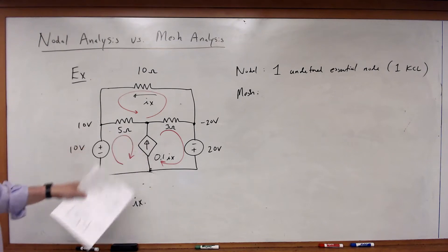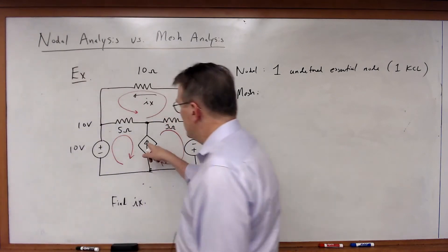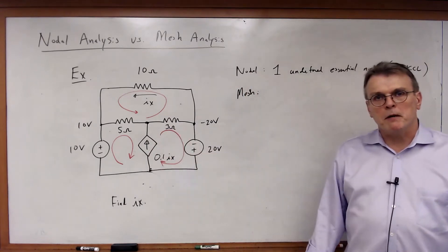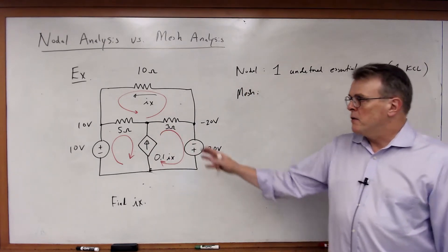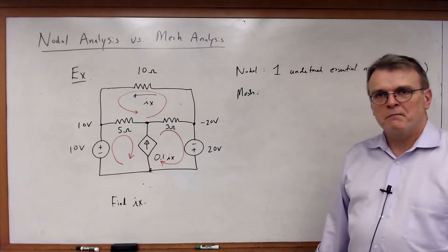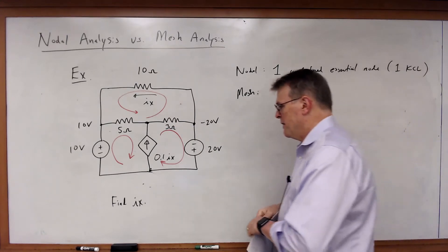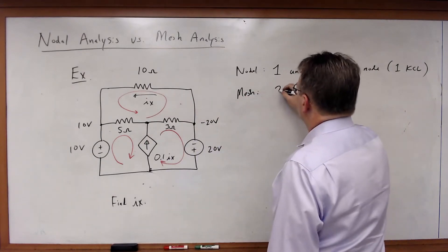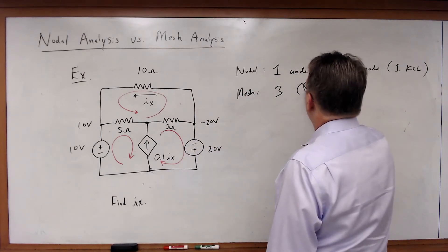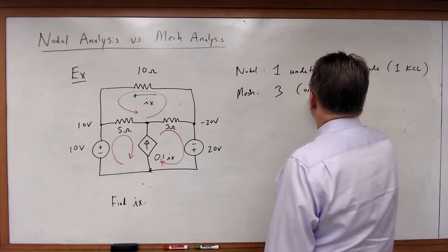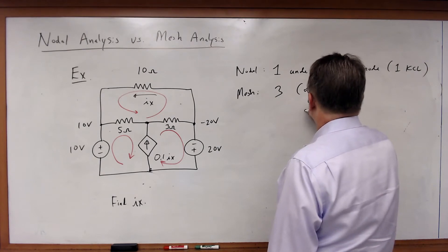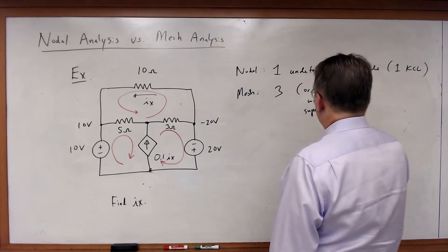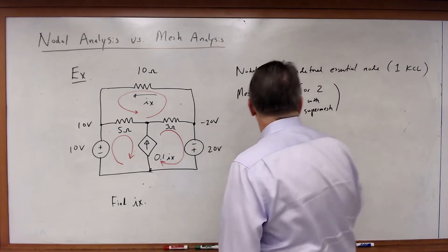Now, you can look at this and say, but Dr. Holman, I've got a dependent current source between those two meshes. Can I make that into a super mesh? You can. Then you've got two mesh equations. So anyway, the way you look at it here, if you're doing mesh, you're either going to have three or two with a super mesh KVL equations.